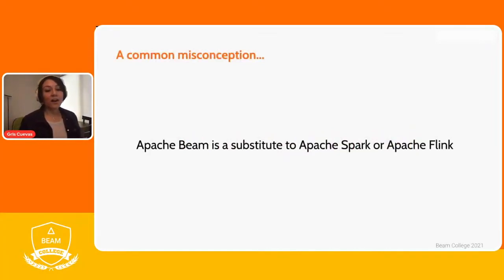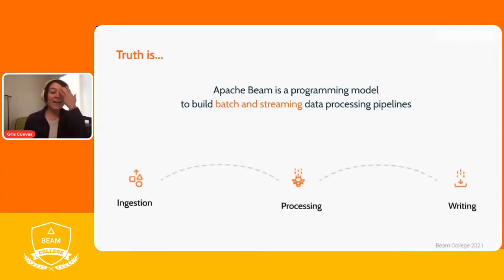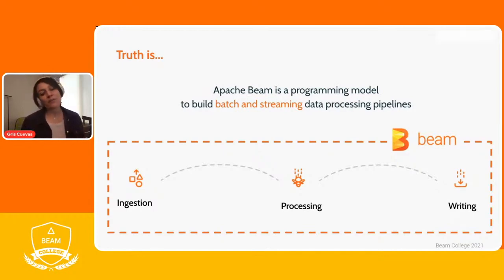So where does Apache Beam fit in? There is a common misconception that Apache Beam is a substitute for Apache Spark or Apache Flink, and many users try to decide whether to use one or the other — but this is a misconception. The truth is that Apache Beam is a programming model to build and define batch and streaming data processing pipelines. It helps you achieve all three phases of data processing — ingestion, processing, and writing — and through today's sessions you'll learn the concepts and how to implement Apache Beam pipelines for your business case.